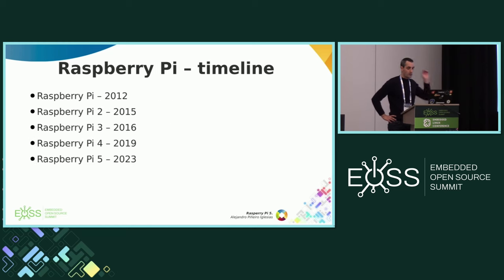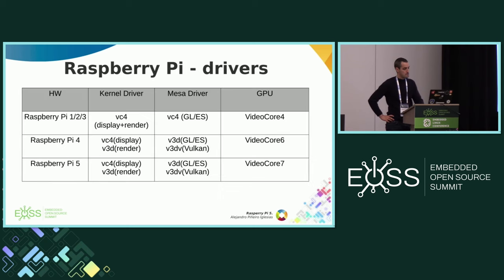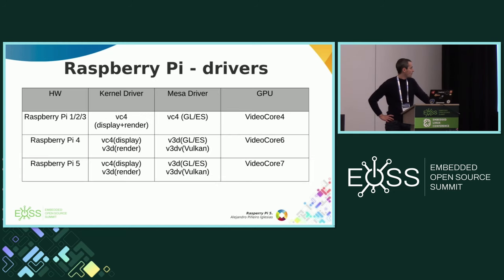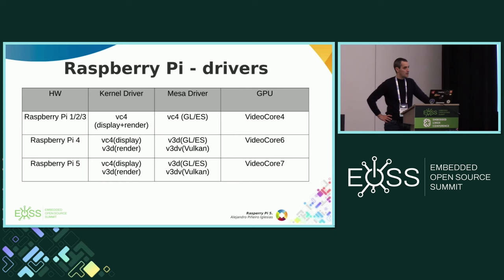In the past years we have this timeline — I'm listing here only the main Raspberry Pi devices. As you can see, more or less every three years there is a new device. In relation to the drivers, we have five devices. For the Raspberry Pi 1, 2, and 3, both the renderer and the display use VC4. In the case of the Raspberry Pi 4, the GPU is different — it's VideoCore 6 — but it still uses VC4 for the display, and there is a kernel driver for rendering called V3D.